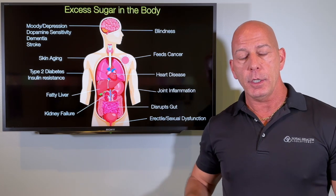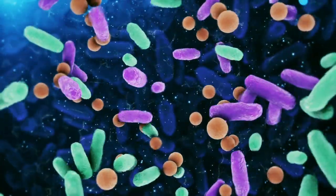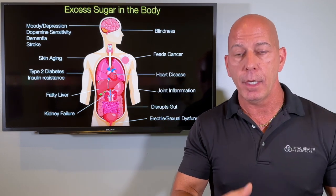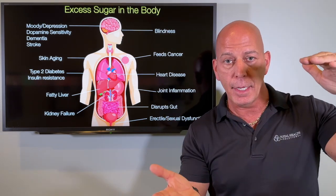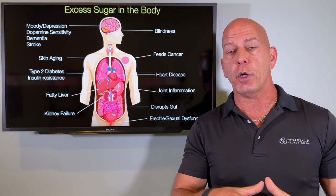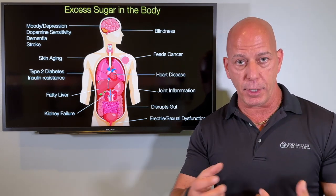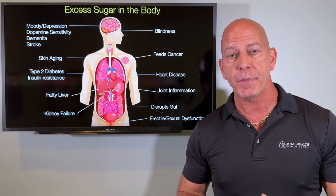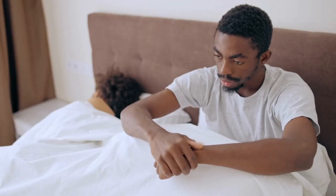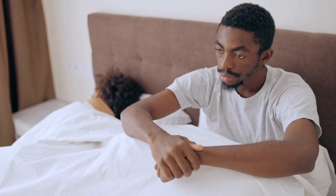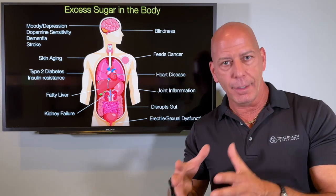Excess sugar also disrupts the gut. You get the wrong type of gut microbiome — instead of bacteroidetes, you get firmicutes, which is basically a high-carb type of bacteria. When you want a bacteria ratio of about 85% good to 15% bad, too much sugar totally skews it in the wrong direction. You start to create a gut microbiome that's highly addicted to sugar, which is why you crave it so much — you want to feed those bugs, and those bugs are making you get the cravings. Also, excess sugar causes erectile and sexual dysfunction, because when you're dealing with those little tiny capillaries and microtubules around the male reproductive organs, you start to create problems with erectile dysfunction.